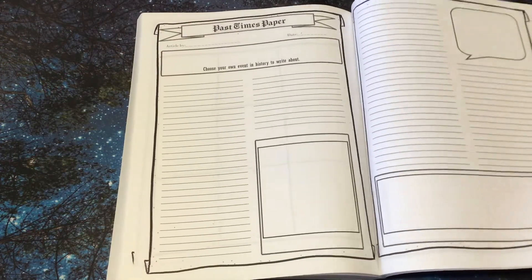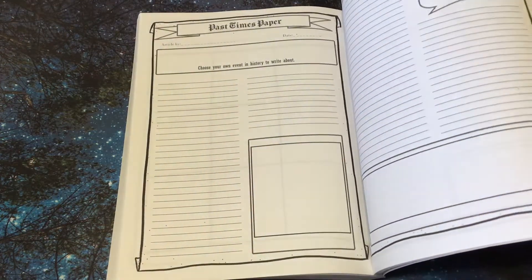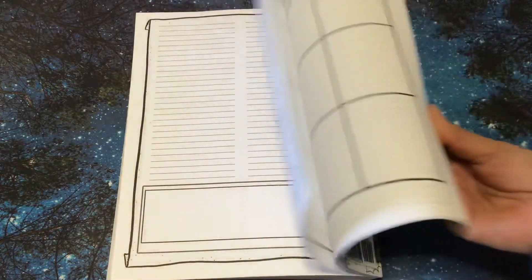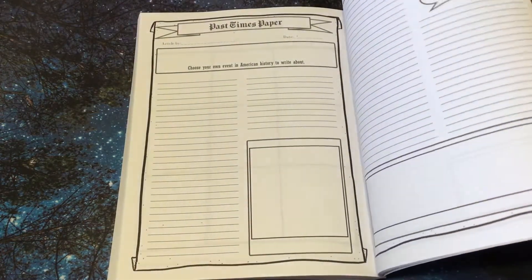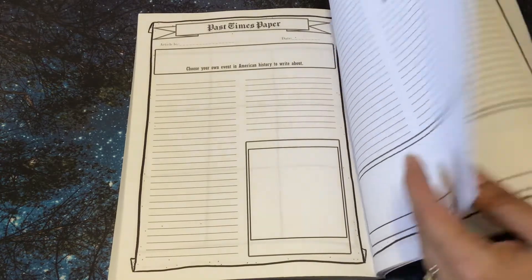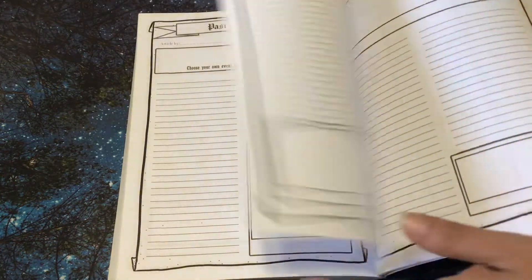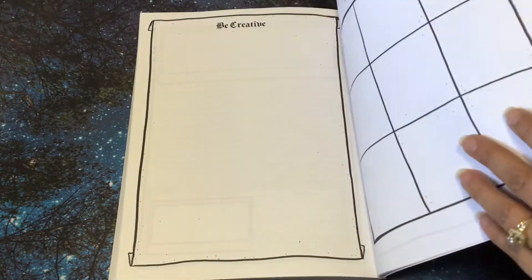And this one says, choose your own event in history to write about. And then another, choose your own event. So in the back, you have some that you can choose yourself. There you go.